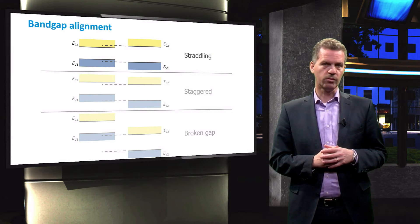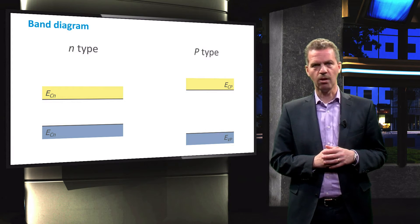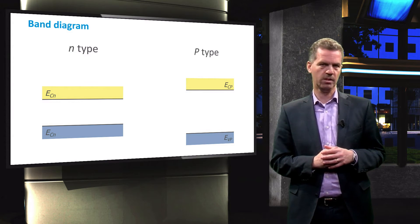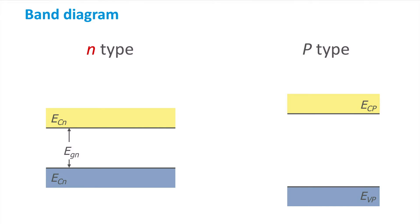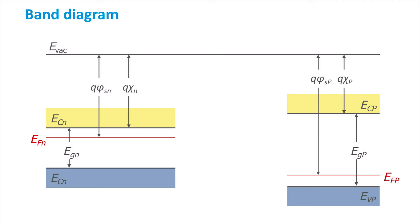Now that we know how the bands will align, we can construct a band diagram of a heterojunction. For this example, we will look at a heterojunction consisting of a low band gap n-type and a high band gap p-type material. For the low band gap n-type semiconductor, the n will be represented using a lower case letter. Conversely, for the high band gap p-type semiconductor, the P will be written with an upper case letter. The position of the Fermi level indicates the type of material. When the materials are not in contact with each other, the vacuum level is drawn horizontal. We can clearly see that both materials have different work functions and electron affinities, resulting in a potential energy difference in both the valence band edges and conduction band edges of the n-type and p-type materials.